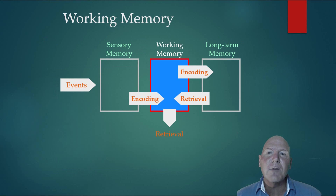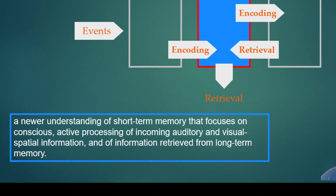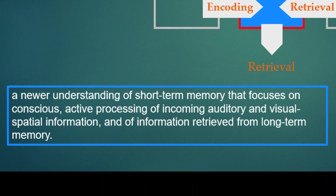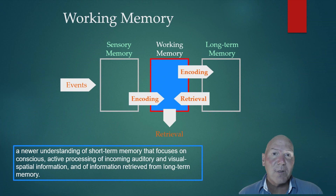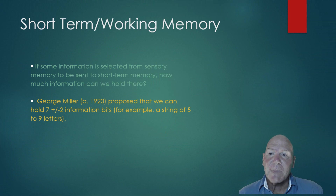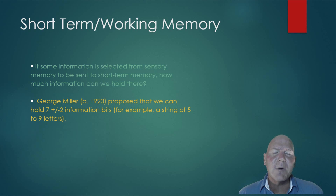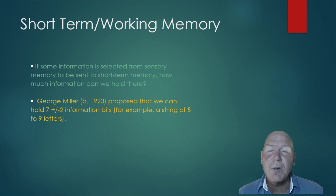Once we've encoded into our sensory memory, what we pay attention to goes into our working memory. It's our newer term for short-term memory, focusing on conscious, active processing of incoming auditory and visual-spatial information and of information retrieved from long-term memory. How much can we put in there? It was discovered that we can hold about seven plus or minus two bits of information — for example, a string of five to nine letters on average in short-term or working memory.